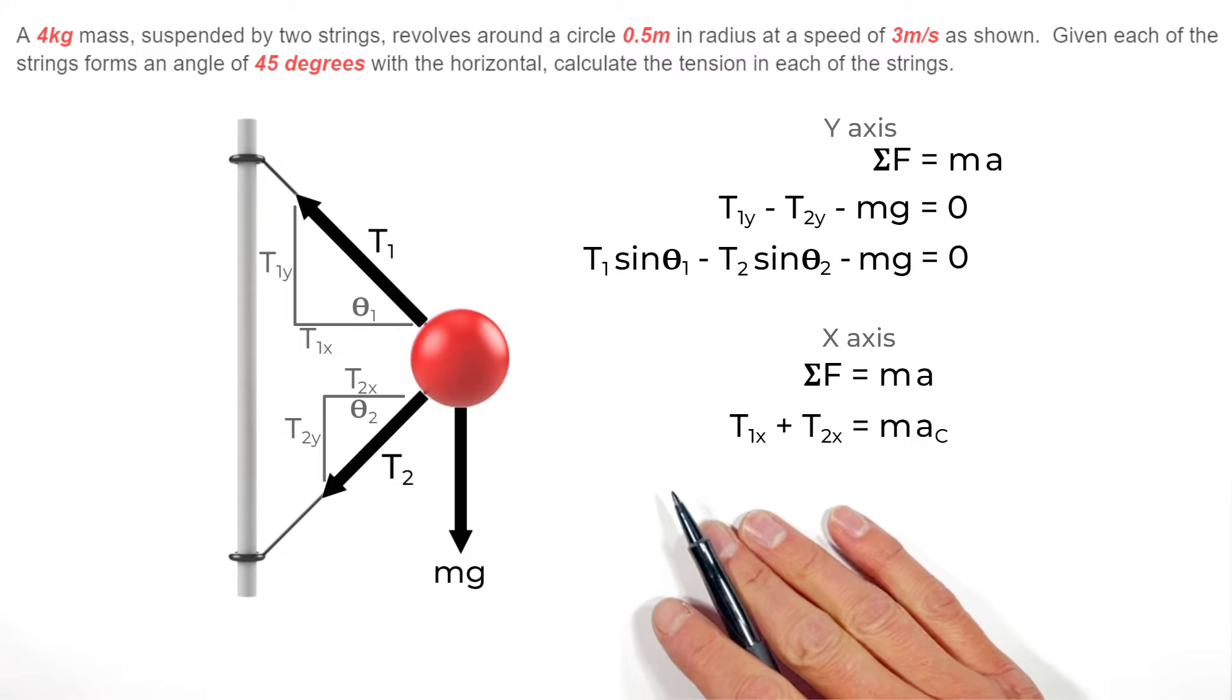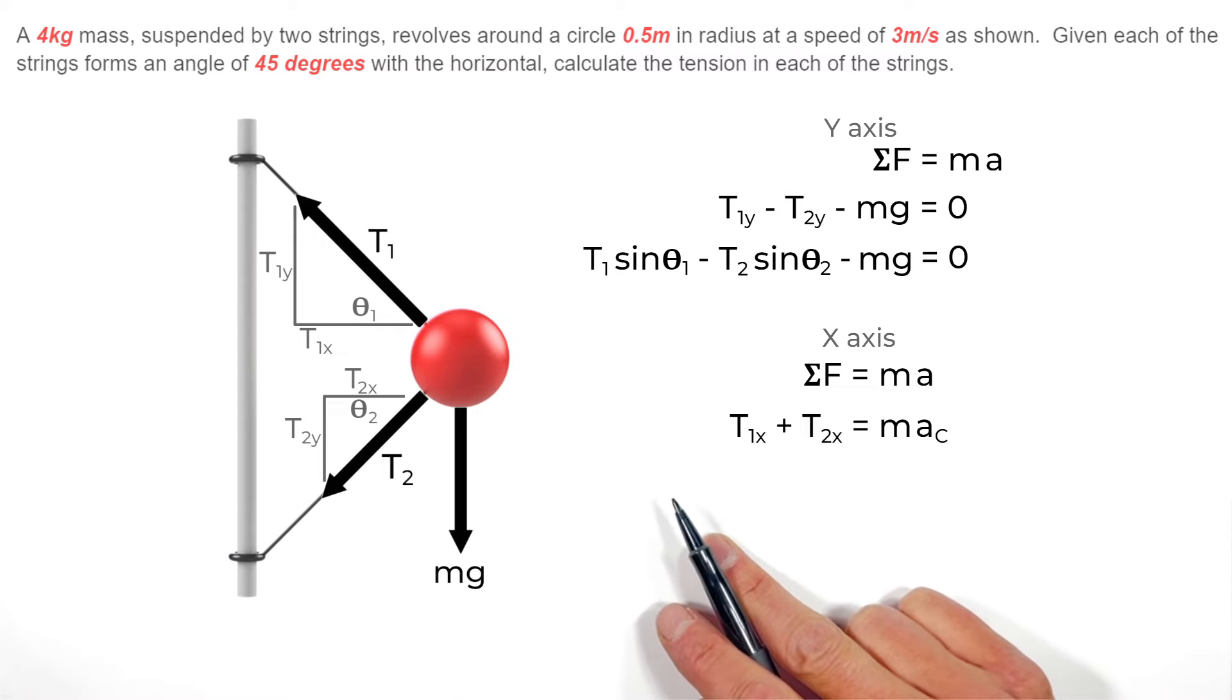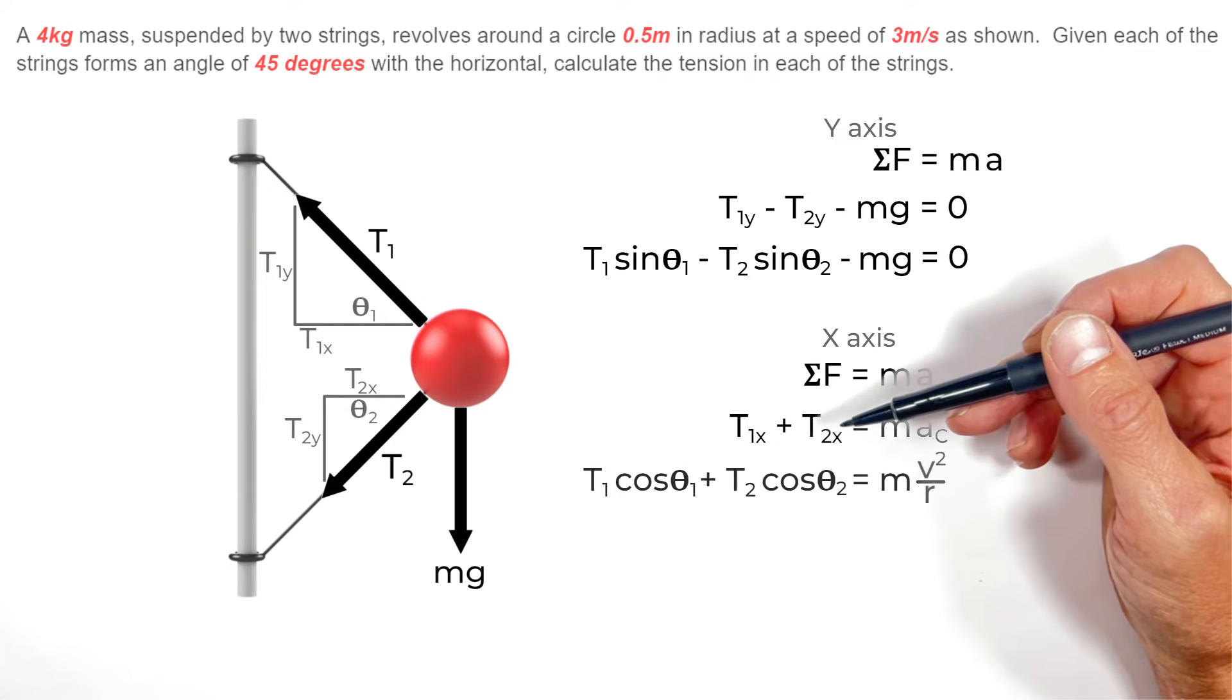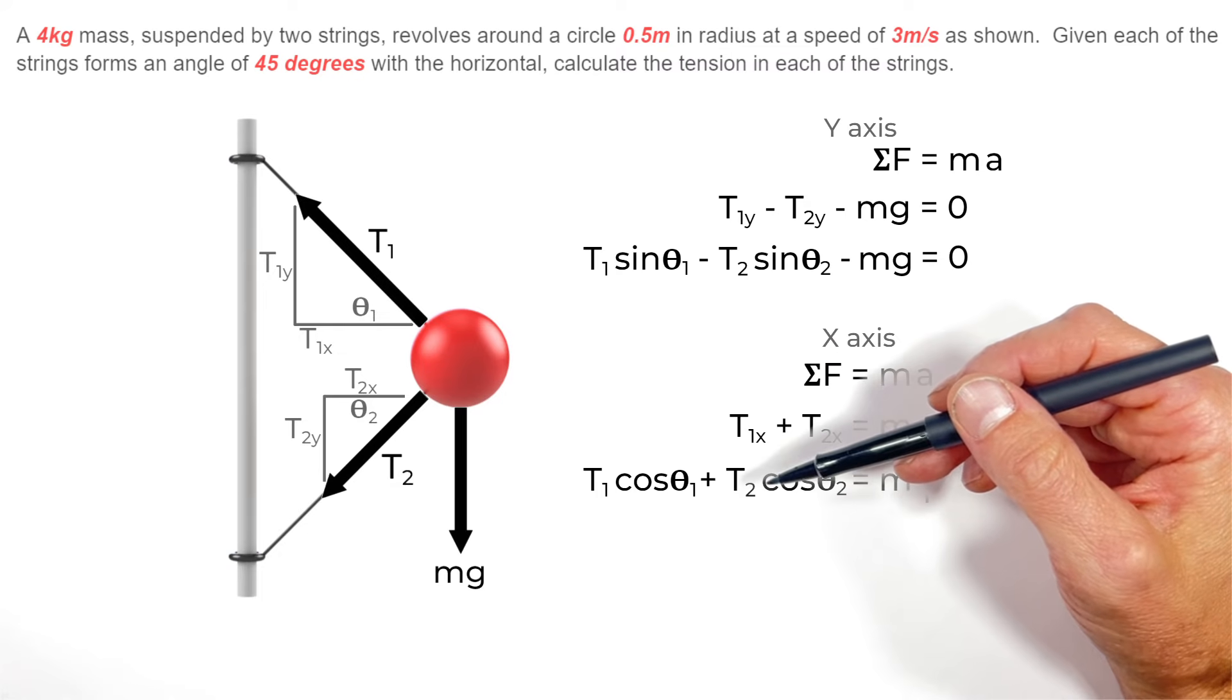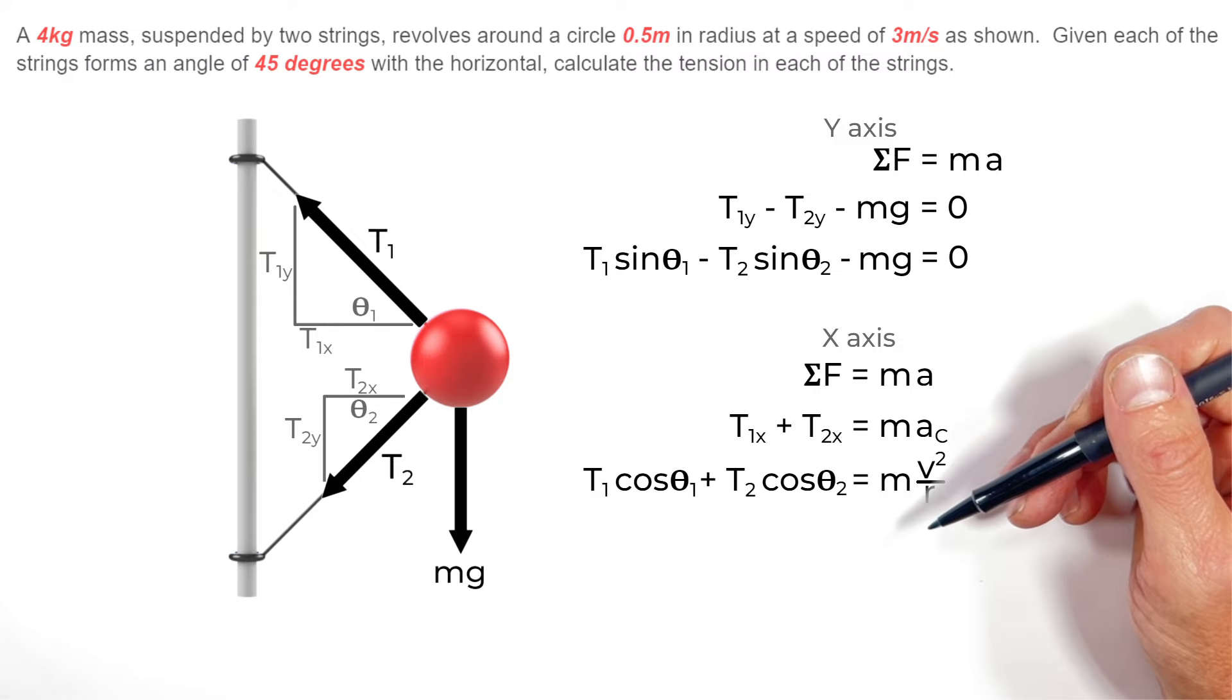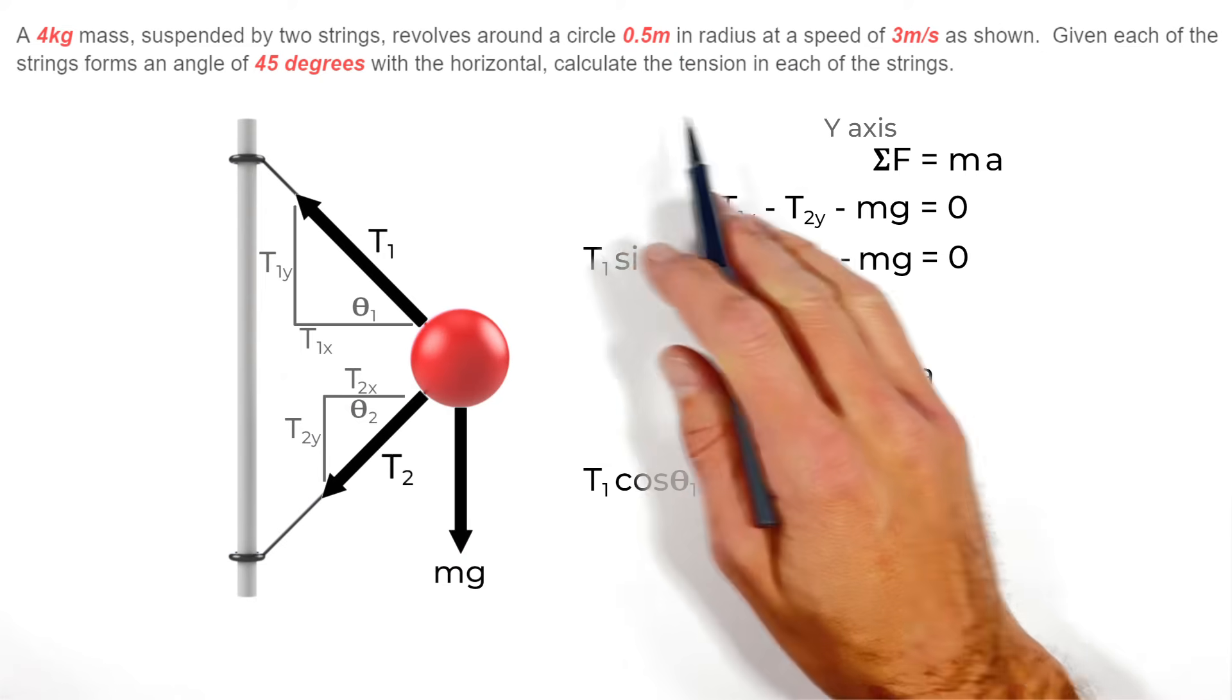Now our two forces that are acting horizontally on this ball are T1x and T2x. So setting T1x plus T2x equal to mAC, we can expand out those T1 and T2x terms just like we did with our y terms up here. We can express T1x as T1 cosine theta and T2 of course is going to be T2 cosine theta. And we're going to set those equal to our mass times the centripetal acceleration, that is v squared over r, which are given to us in the problem.